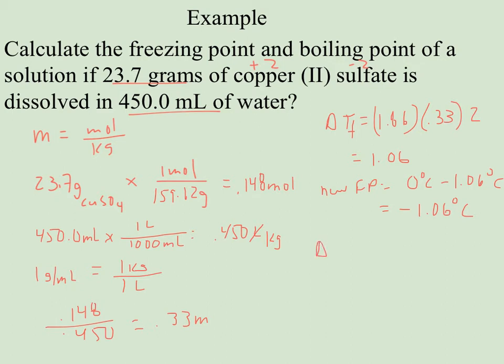If I do the same thing for boiling point, ΔTB, now when I find the KB for water, it's 0.512. My molality is still 0.33, still have two ions. So 0.512 times 0.33 times 2 gives me 0.34 degrees Celsius. So not much of a change. And my new boiling point is going to be my old boiling point plus the new. And again, a very small effect, 100.34 degrees Celsius.